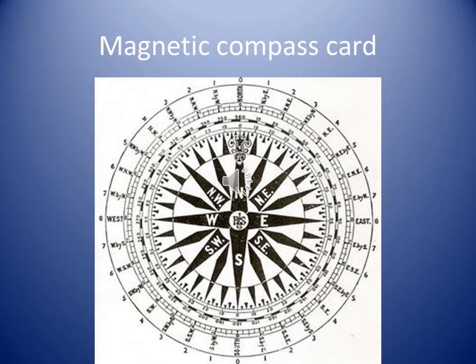Cardinal and intercardinal points are still widely used especially for wind and current directions in weather reports and forecasts and sailing directions.